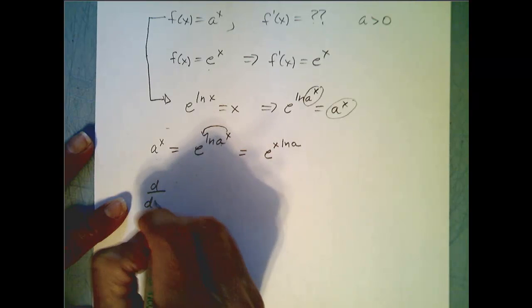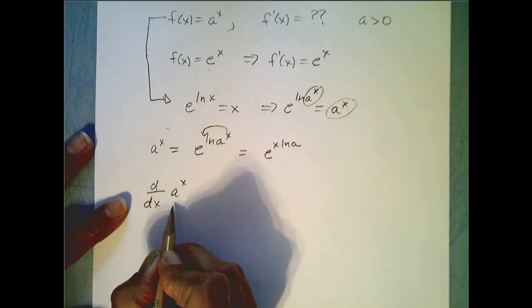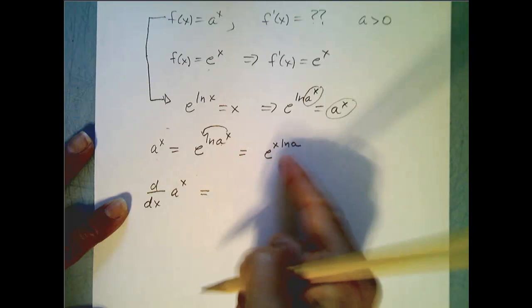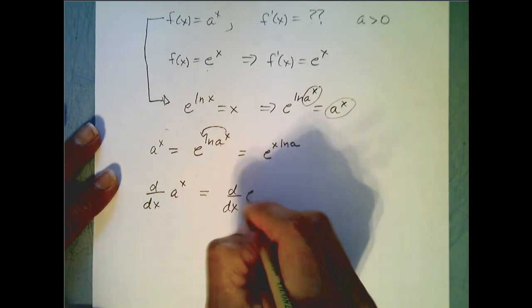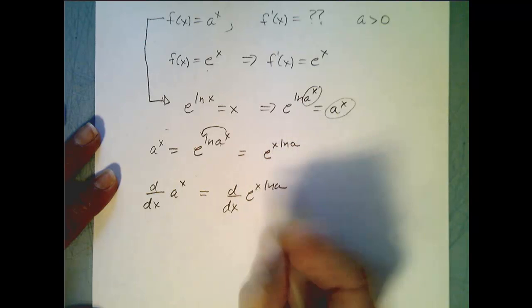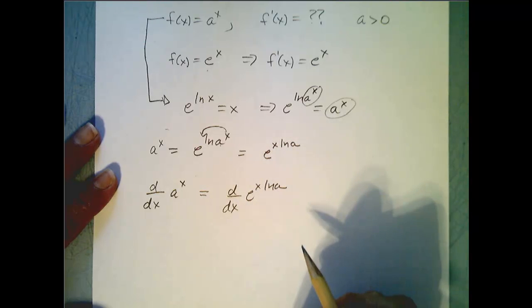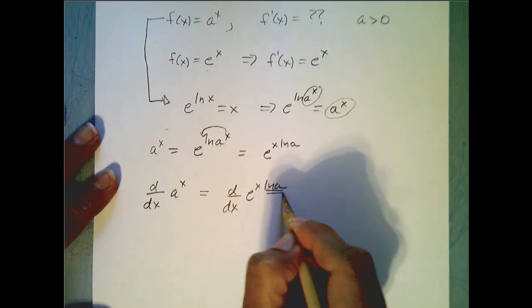So remember our original question was what is the derivative of a to the x? Well, since these are equivalent, it means it is the derivative of e to the x ln of a. Now, we are going to apply the chain rule here. This is just some number, so it is e to the x times that number.